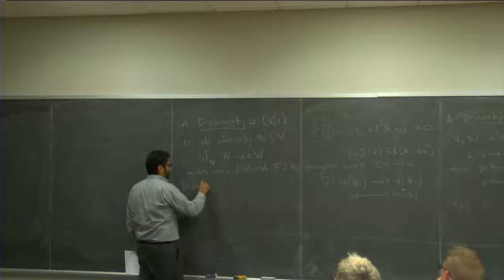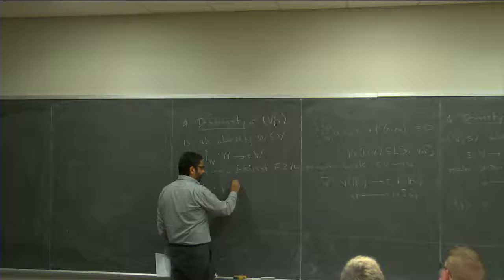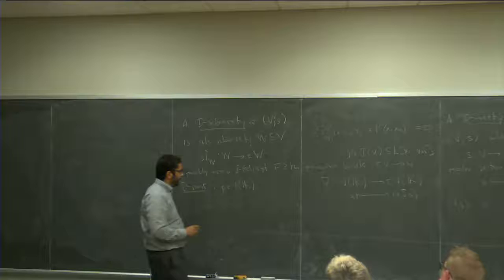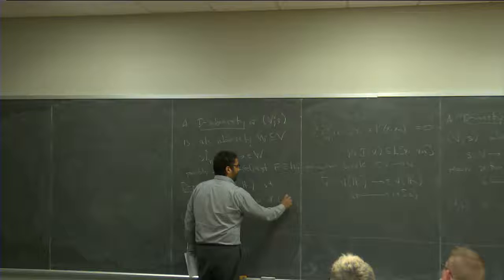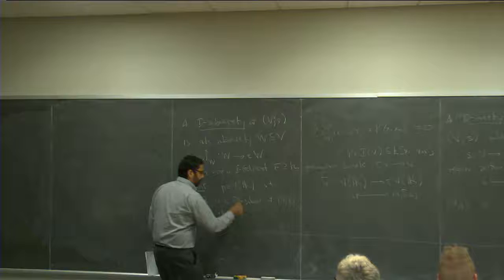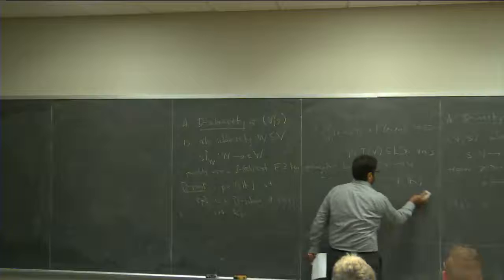A special case of a D-subvariety is a D-point. A D-point is a point in the variety, in the ambient universe of the differentially closed field, such that the singleton {P} is a D-subvariety. It's going to be over the field generated by the point. A D-point is just a zero-dimensional D-subvariety working inside this universal domain.